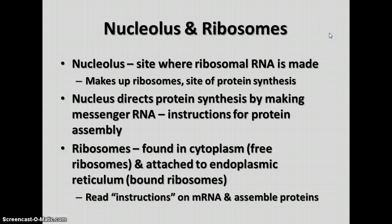Inside the nucleus there's a darker, denser region called the nucleolus, which is where ribosomal RNA is synthesized. The nucleolus is where the ribosomal RNA is made — the type of RNA that makes up the ribosomes along with some protein. The nucleus directs protein synthesis by making messenger RNA, a different kind of RNA, that has the instructions for protein assembly.